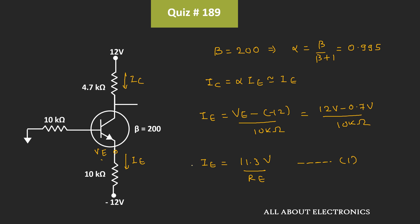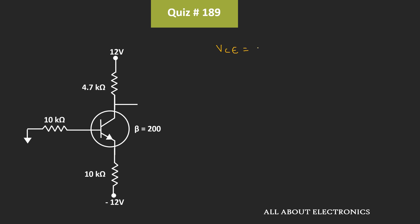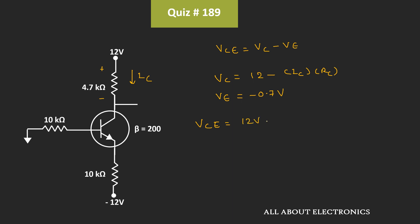Once we know the value of the emitter current or collector current, we can easily find the voltage Vce. This voltage Vce equals the collector voltage minus the emitter voltage. The collector voltage Vc equals 12V minus Ic×Rc, and the emitter voltage Ve equals −0.7V. So Vce equals 12V − Ic×Rc − (−0.7V), which is 12.7V − Ic×Rc. Call this the second equation.